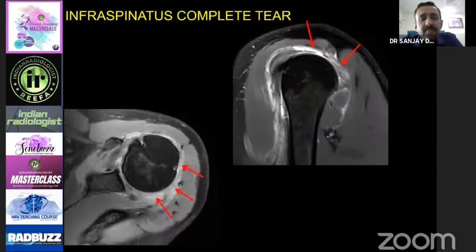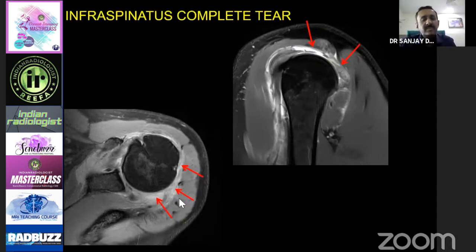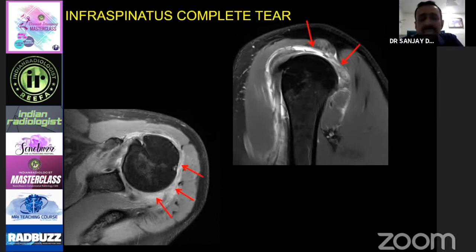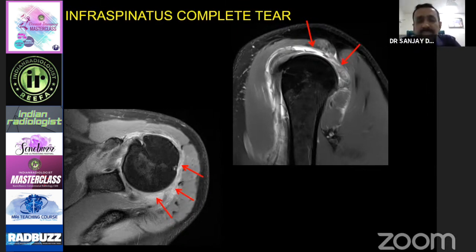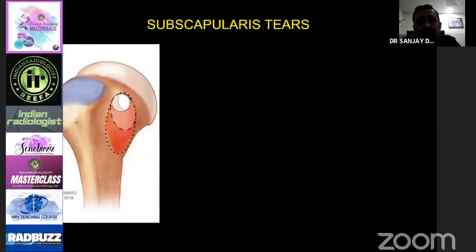Similar to the supraspinatus, you have partial thickness and full thickness tears in the infraspinatus, subscapularis, and the rest of the tendons. Whenever there is a tear, you should measure it from anterior to posterior. For partial thickness tears, measure the percentage of thickness involved — whether it is 50%, 30%, more than 70%, or near full thickness. In this patient you can see full thickness tear of the infraspinatus tendon with retraction up to the glenohumeral joint.